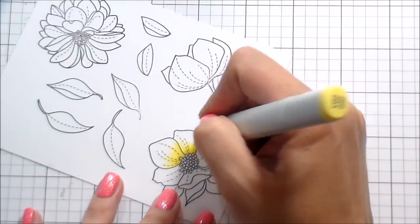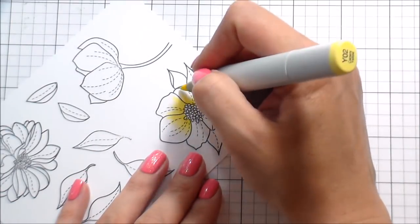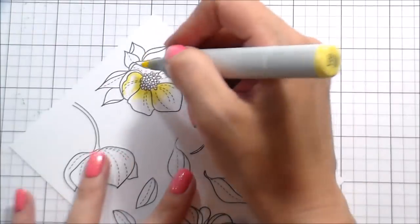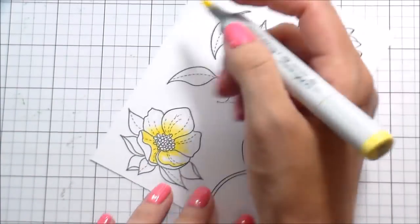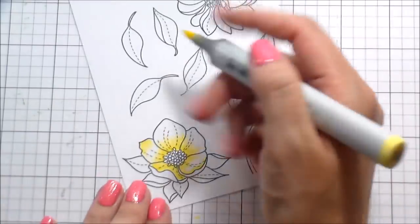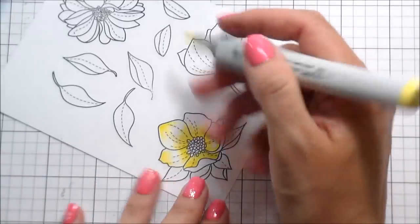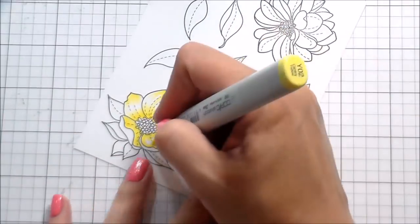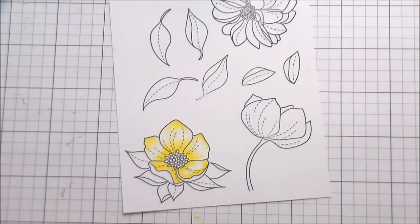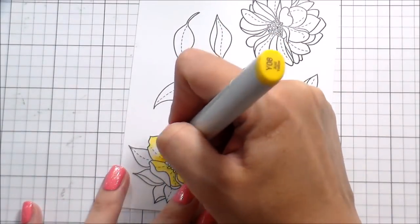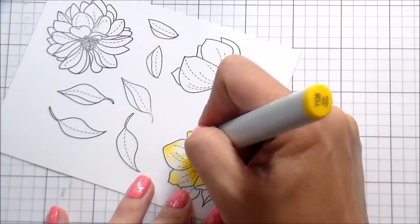Originally when I sat down to start making this card I thought my background was going to be blue, so I thought some bright yellow flowers would be really pretty with that. I toyed around with doing maybe an orangish red and then ultimately I settled on the yellow because I don't normally gravitate toward yellow and I thought that would be something different.